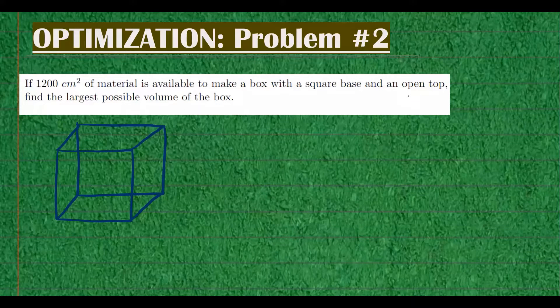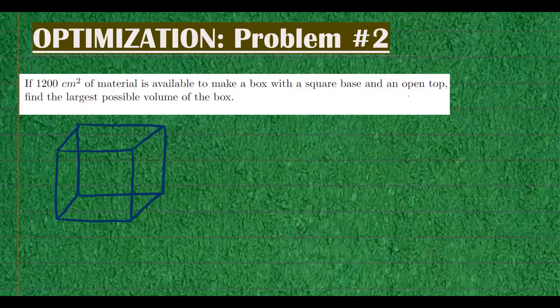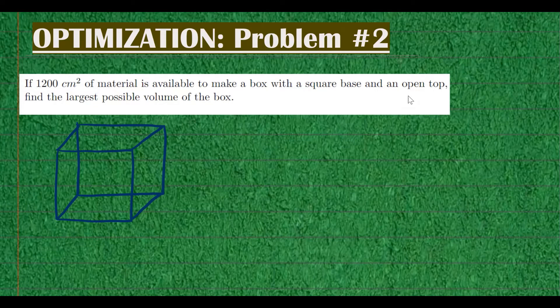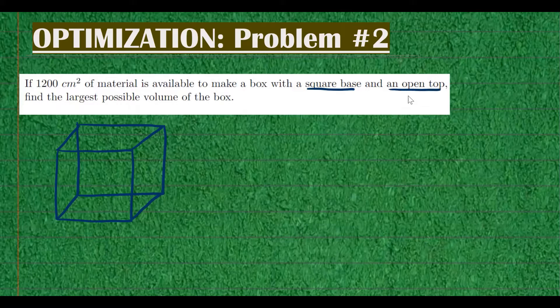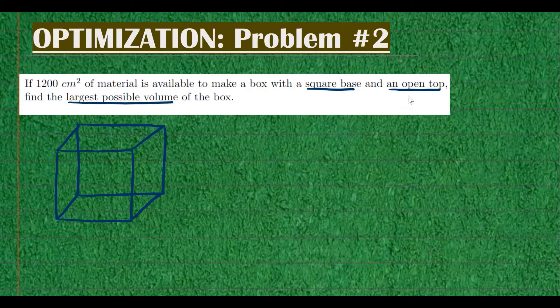Let's go ahead and work out this optimization problem. Suppose that you have 1200 centimeters squared of material available to make a box with a square base and an open top. We want to optimize the volume. How large should the volume be to make this box?